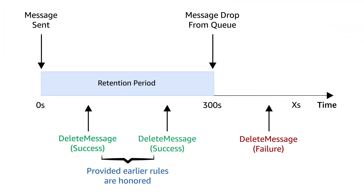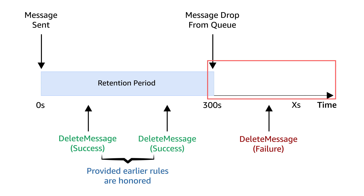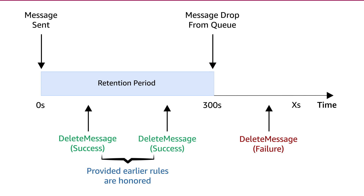Also note that the retention period takes precedence over visibility timeouts and delays. If the delay and visibility timeout exceeds the total retention period of the message, then the message is dropped from the queue even before the visibility period expires. In this case, the delete message API or the change message visibility API will fail with the 'receipt handle is invalid' or 'invalid parameter value' error.